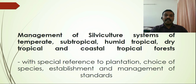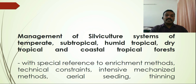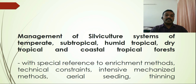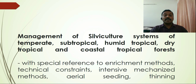Finally, the application part covers the management of silviculture systems in temperate, sub-tropical humid tropical, dry tropical, and coastal tropical forests, with special reference to planned working, choice of species, establishment and management of standards, enrichment methods, technical constraints, intensive mechanized methods, aerial seeding, and thinning. Forest groups include southern wet temperate forest, northern mountain temperate forest, sub-tropical pine forest, and tropical wet evergreen forest.